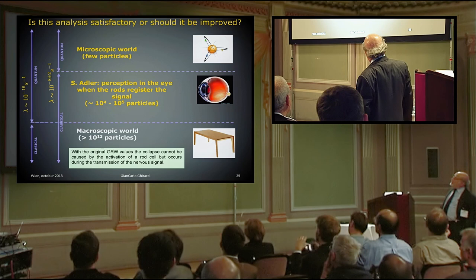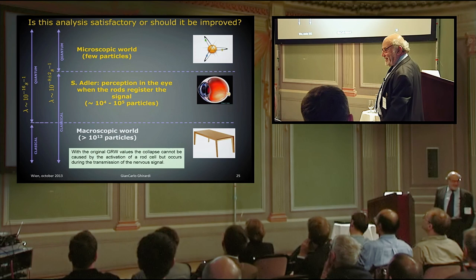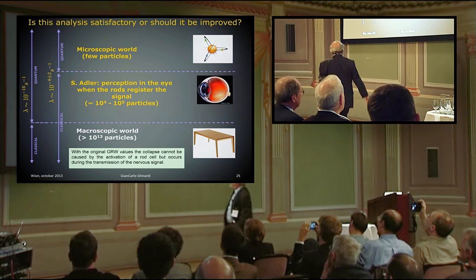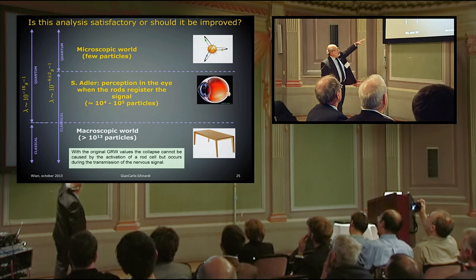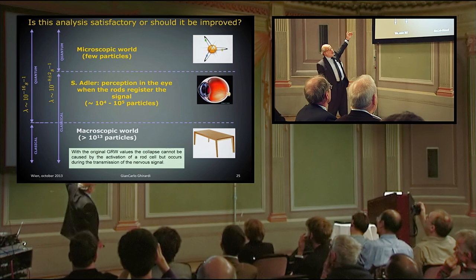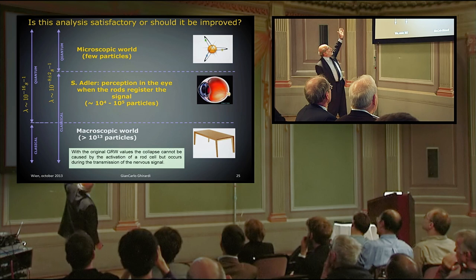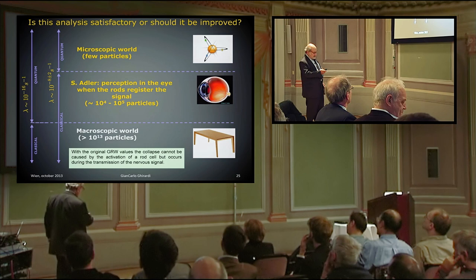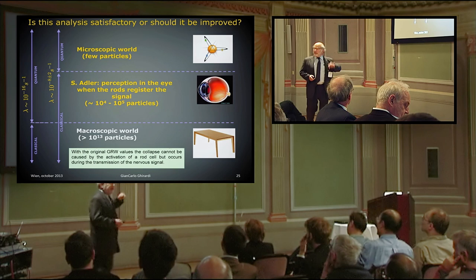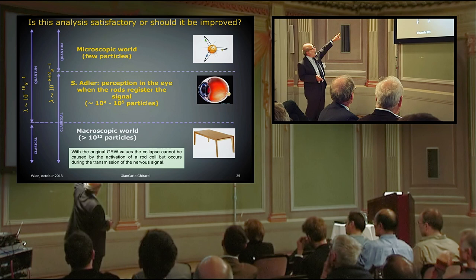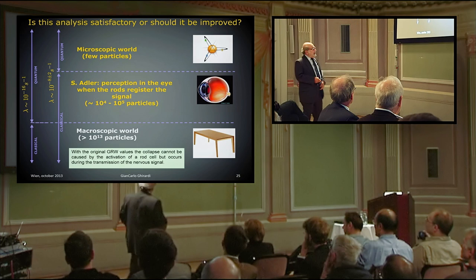Is this analysis satisfactory? Recently, Professor Adler, who was investigating this, has discussed the problem. So here I have put the GRW choice 10^-16 seconds^-1 for lambda, which means that in the macroscopic world you don't have superposition. But over this, you can have superposition. And there, you have the microscopic world in which you have atoms and all these things. The problem that Professor Adler has raised is, is it possible to assume that the reduction takes place in the rod of the eye? To do this, you have to change the factor lambda, the frequency lambda, by a factor 10^8.